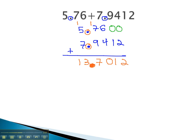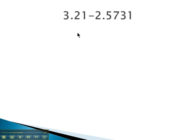Let's try a subtraction problem. Here we're subtracting, keeping it in order, 3 and 21 hundredths or 3.21 minus, lining up the decimal point, 2 and 5,731 ten thousandths.